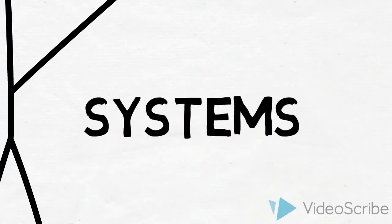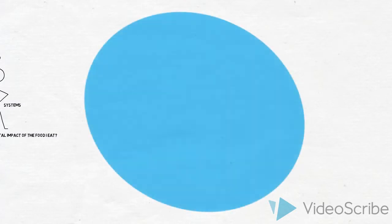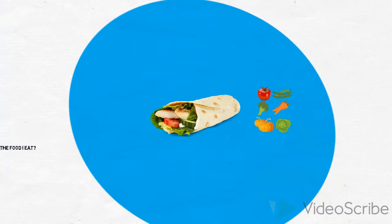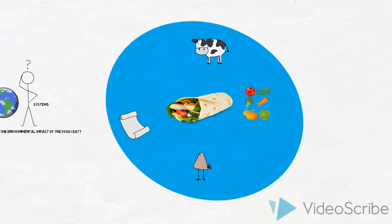Let's take a shawarma for example. Its ingredients, the vegetables, the chicken or beef, and the paper for packaging are parts of the shawarma system.